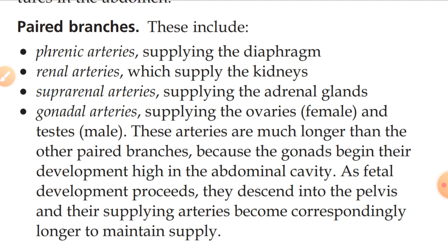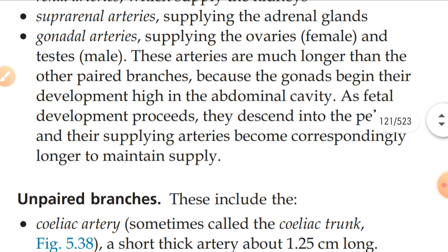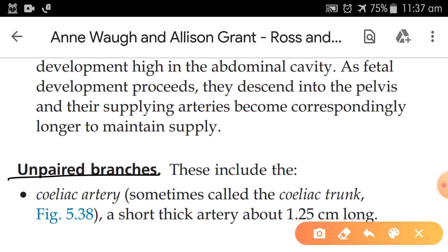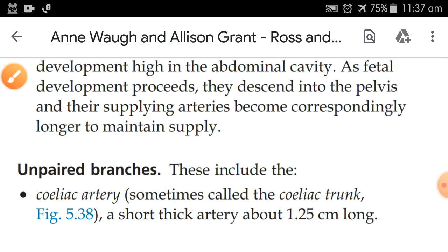So exactly four paired branches: phrenic artery, renal artery, suprarenal artery, and gonadal artery. Now about the unpaired branches — unpaired means that it is a single branch and not paired. The first unpaired branch is the celiac artery, sometimes called the celiac trunk. It is a short thick artery about 1.2 cm long.